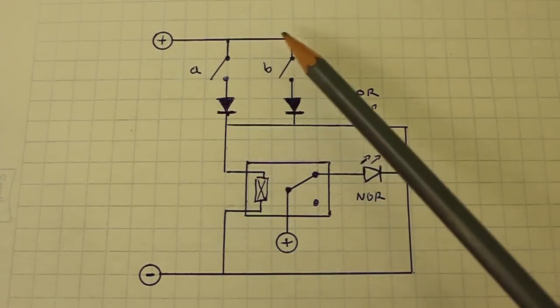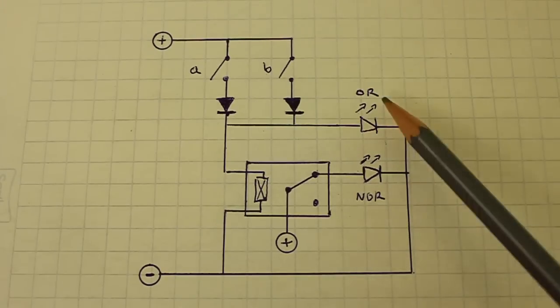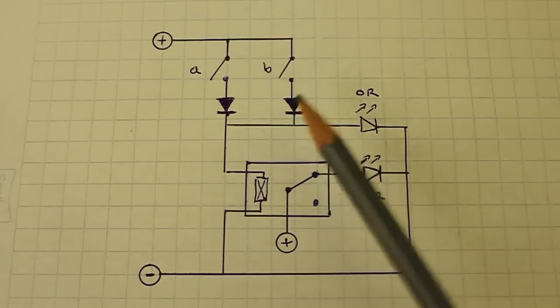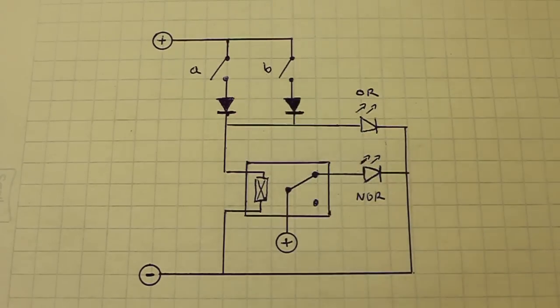And the current will also flow through this LED and will turn on. The presence of the diodes is necessary to avoid returns of current in any of these ways.